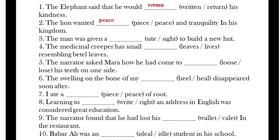Some homophone pairs are: sight/site, lives/leaves, loose/lose, heal/heel, peace/piece, right/write, wallet/wallet, ideal/ideal. These are called homophones.